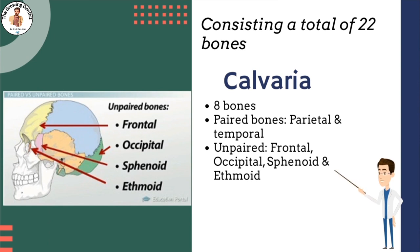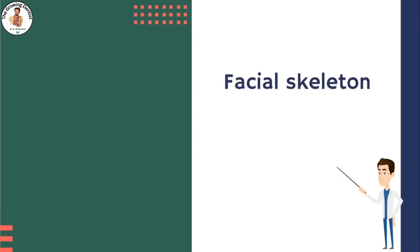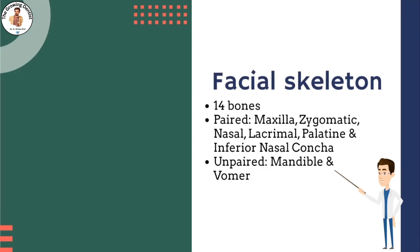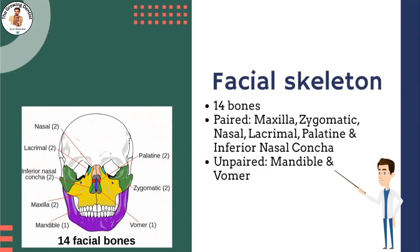The facial skeleton has a total number of 14 bones. Its paired bones are maxilla, zygomatic, nasal, lacrimal, palatine, and inferior nasal concha. The mandible and vomer are the unpaired ones.